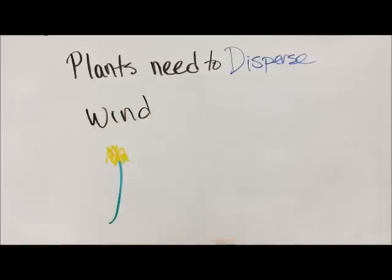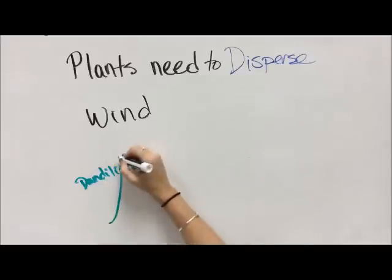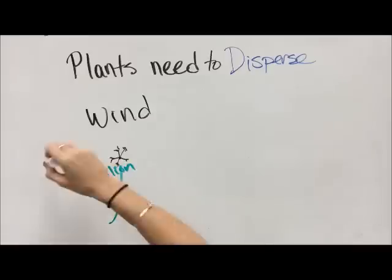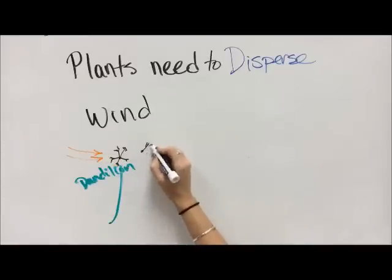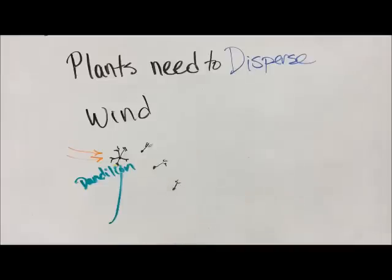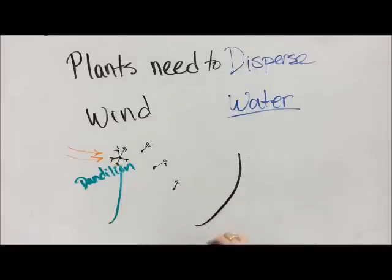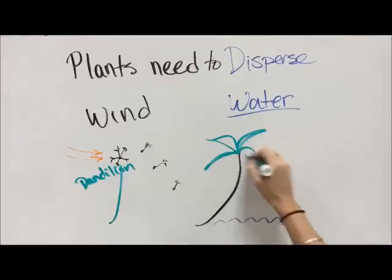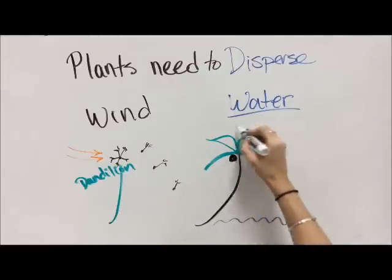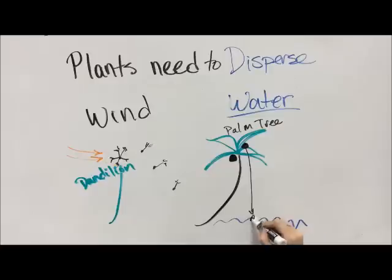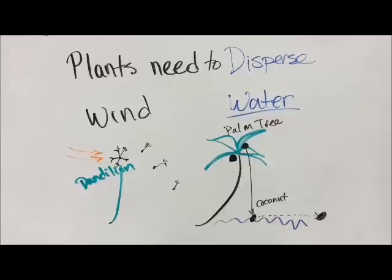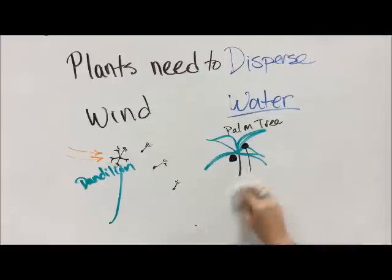Some plants use the wind to spread their seeds around. Here's the dandelion — it's all happy and yellow, the bees come around and pollinate it. Once all of the eggs have been fertilized, it turns into that white puffy thing, and each one of those little white puffy things is actually a seed. The wind comes along and blows those happy little umbrella seeds, and they cruise over and make more dandelions. Some plants use water to disperse their seeds, like a palm tree. The seeds of some palm trees are coconuts, so they drop their coconut into the ocean, the ocean carries it away, and it lands in some faraway place and turns into a coconut tree.